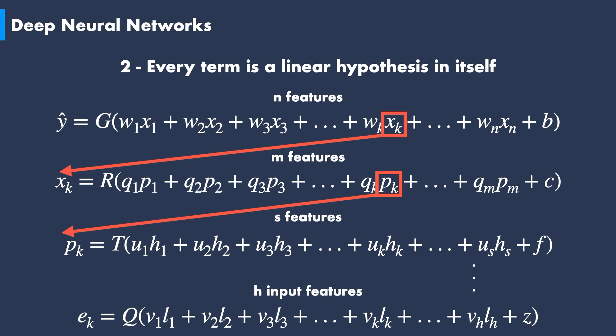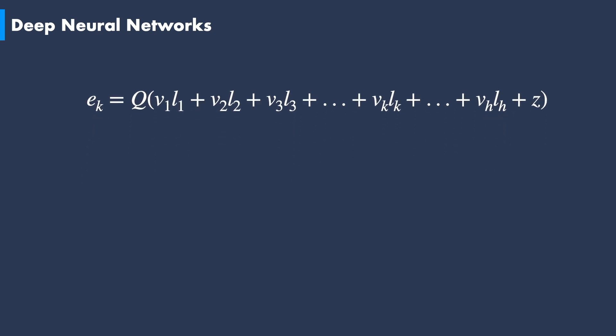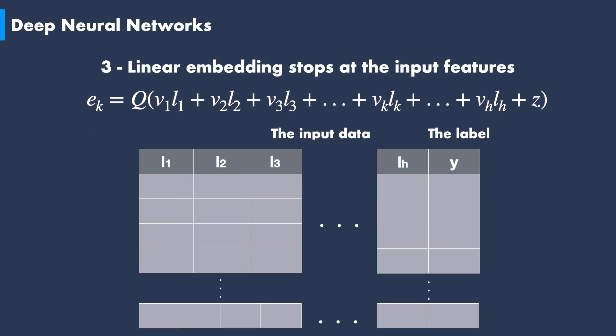This linear embedding process goes on and on until we reach a formula of the hypothesis expressed using only the raw input features of the data set. This brings us to the third principle, which states that the embedding process stops as soon as we reach a linear hypothesis expressed solely with the input features of our data set. In this case, the input hypothesis expressed as eₖ is a linear combination of h input features l, weighted with v₁ to vₕ weights and using an activation function q. The terms l₁, l₂, until lₕ are truly the input features and can no longer be expressed as a linear combination of other terms.